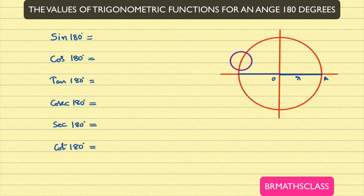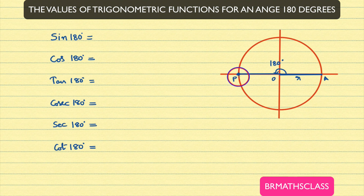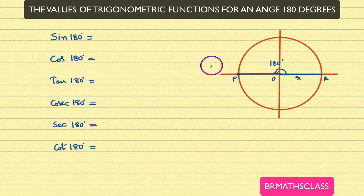So, what is this angle now here? This angle is 180 degrees. It is important to know what is this point — this is the terminal point on the terminal ray. This point we need to find. The x coordinate and y coordinate of this point are important.